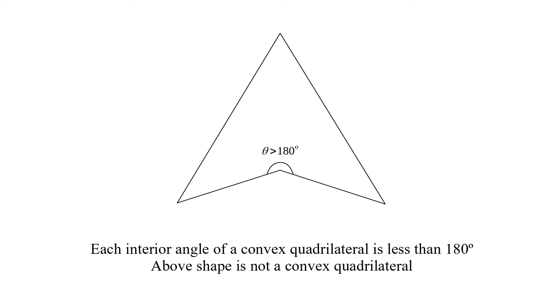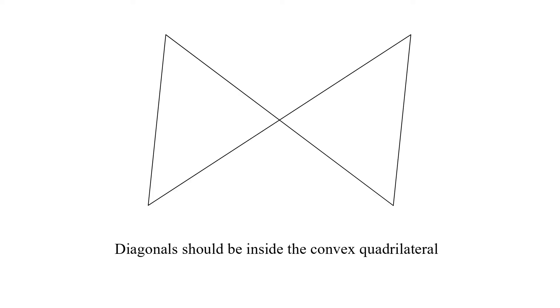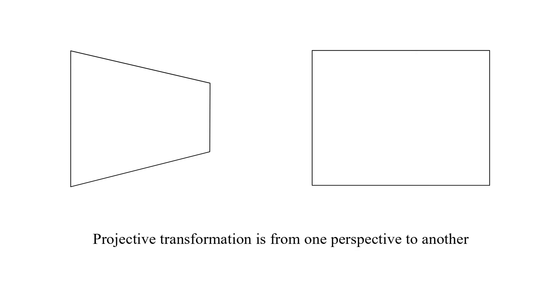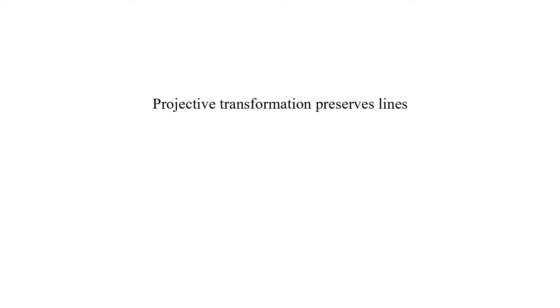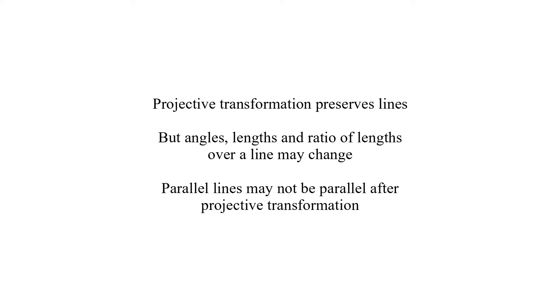Each interior angle of a convex quadrilateral is less than 180 degrees, so this shape is not a convex quadrilateral. Diagonals should be inside the convex quadrilateral, so these shapes are not convex quadrilaterals. Projective transformation maps from one 2D plane to another 2D plane. It preserves lines, but angles, lengths, and ratio of lengths over a line may change. Parallel lines may not be parallel after projective transformation.